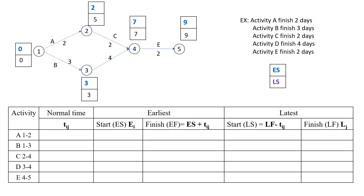First, draw a tabular column and write activities along with their normal times. Activity A is 1 to 2 with normal time Tij of 2. Activity B is 1 to 3 with Tij of 3. Activity C is 2 to 4 with Tij of 2. Activity D is 3 to 4 with Tij of 4. And activity E is 4 to 5 with normal time Tij of 2.